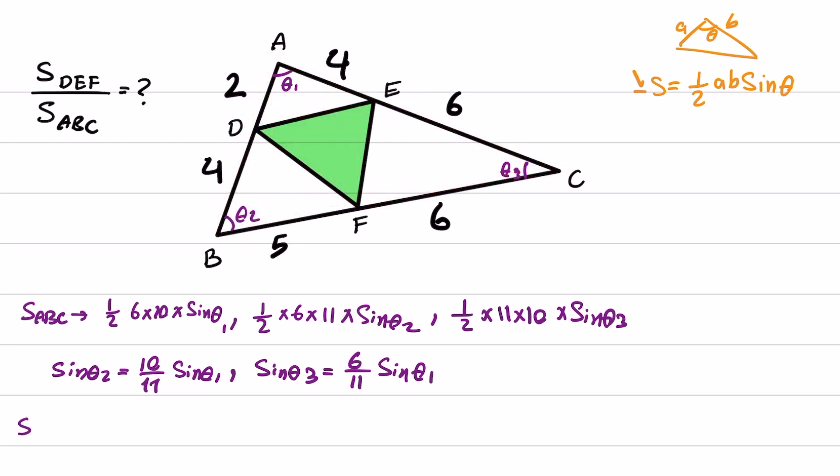So S DEF equals to area of the triangle ABC, which we can write as 1/2 times 6 times 10 times sine theta 1 minus area of this triangle, which is 1/2 times 2 times 4 times sine theta 1 minus area of this triangle, which is 1/2 times 4 times 5 times sine theta 2.